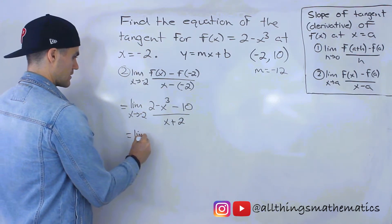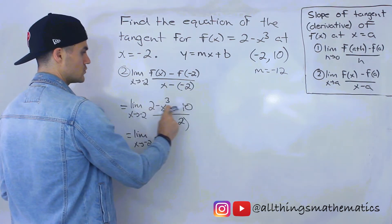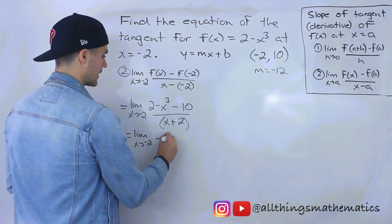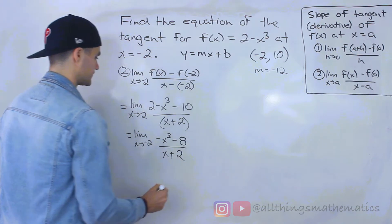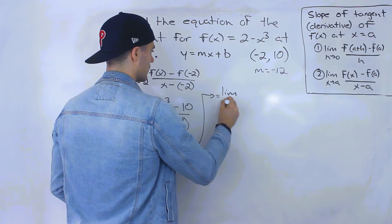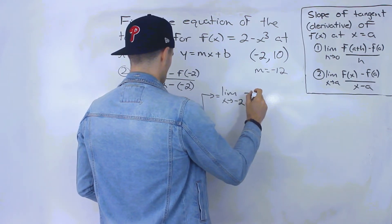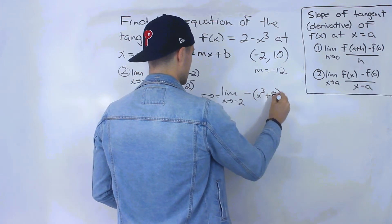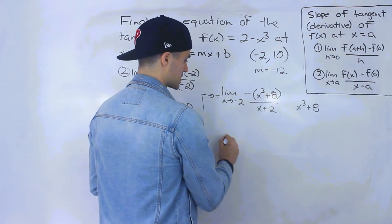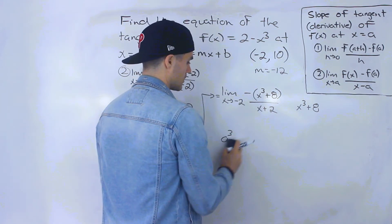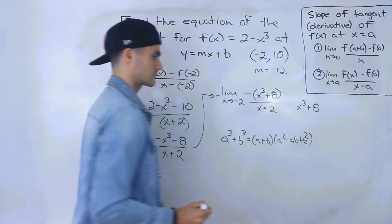We can't plug in negative 2 yet because it would make the denominator 0, so we need to simplify. In the numerator, 2 minus 10 gives negative 8, so we get negative x cubed minus 8 all over x plus 2. We can factor out a negative to get negative times (x cubed plus 8) all over x plus 2. Notice that x cubed plus 8 is a sum of cubes. The sum of cubes formula is a³ plus b³ equals (a plus b)(a squared minus ab plus b squared).